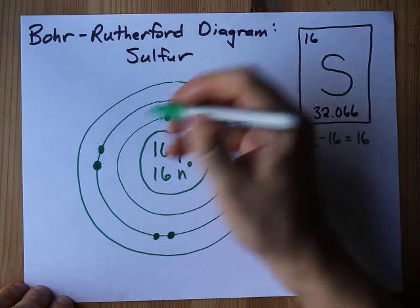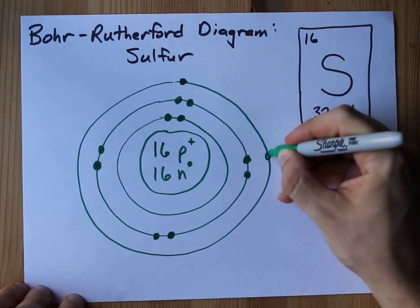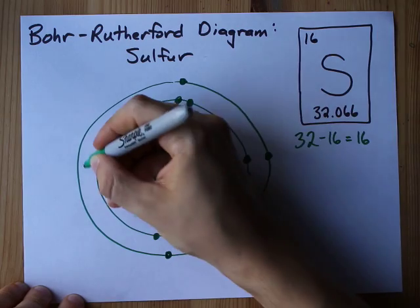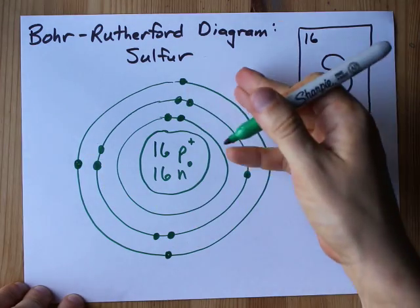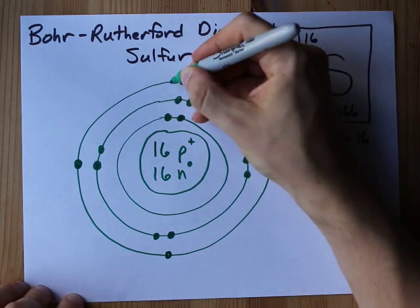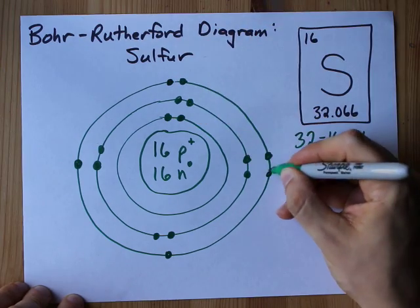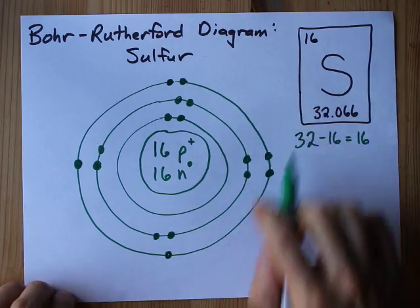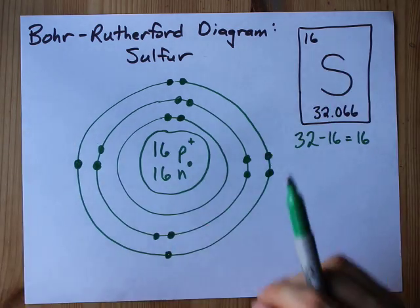Sixteen total, I had ten, so I can do one, two, three, four. Again singles before I double them up. Five, six electrons in my third shell. That makes 16 total, and now I'm done.